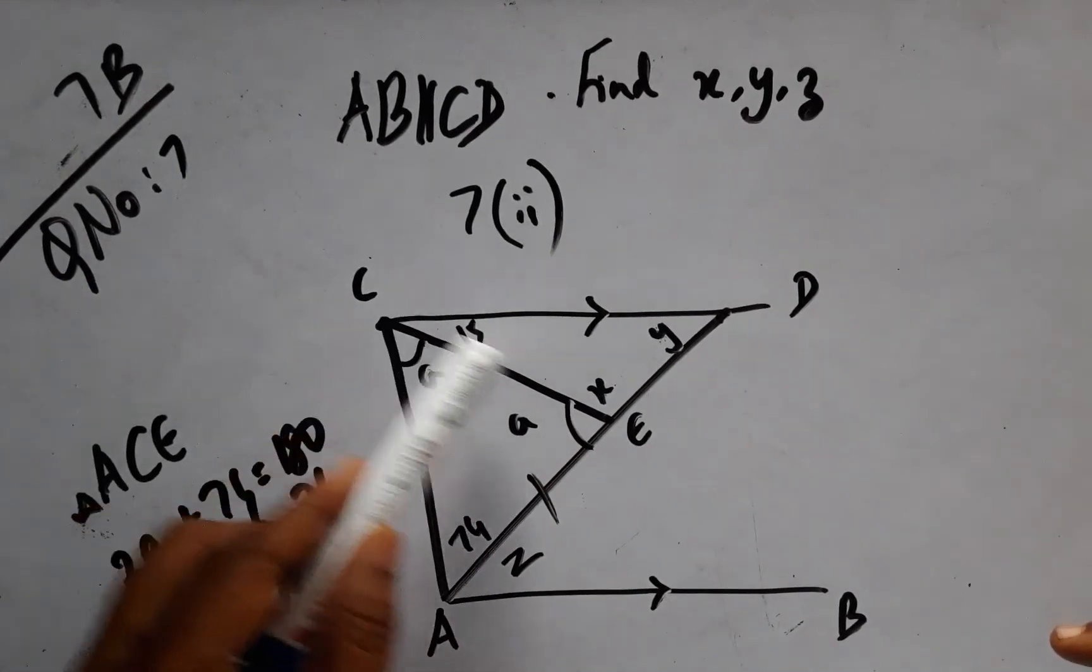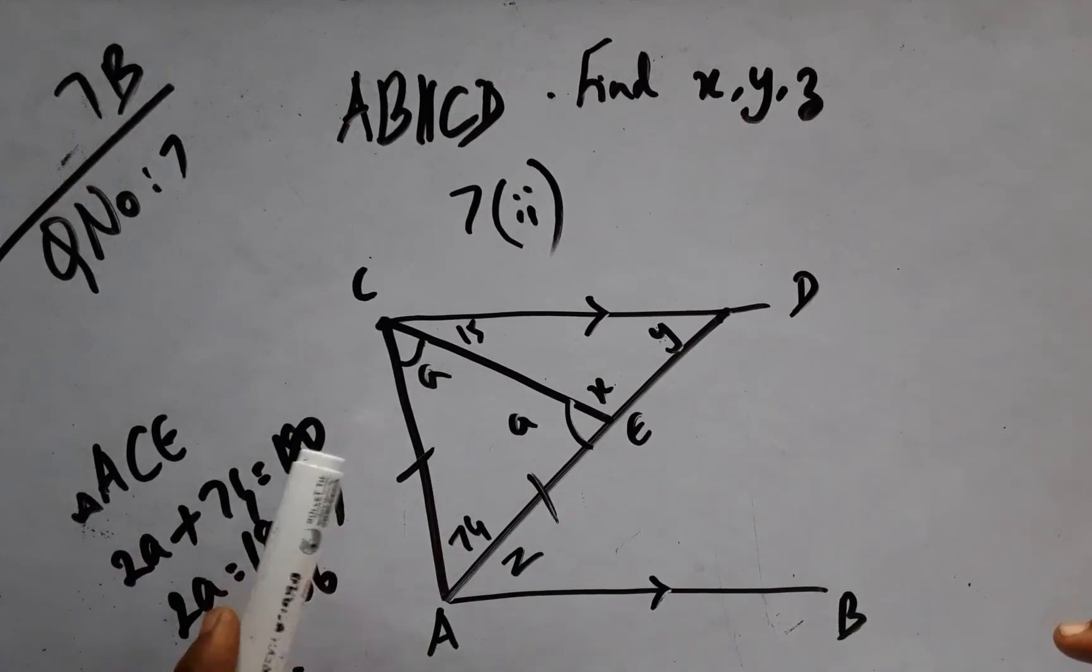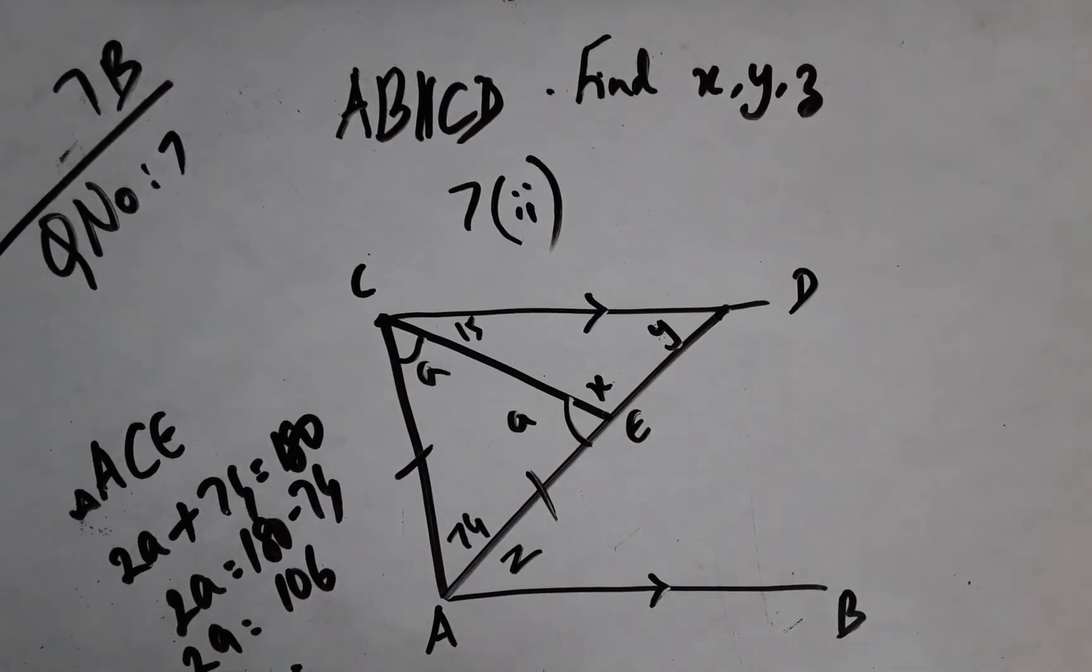And quickly on ACE triangle, if I apply angle sum property, it will be A plus A, 2A plus 74 will be 180 degrees. Now for my 2A, I shift 74 to this side, it becomes negative 74, and this is 106, and my A will be 53 degrees.